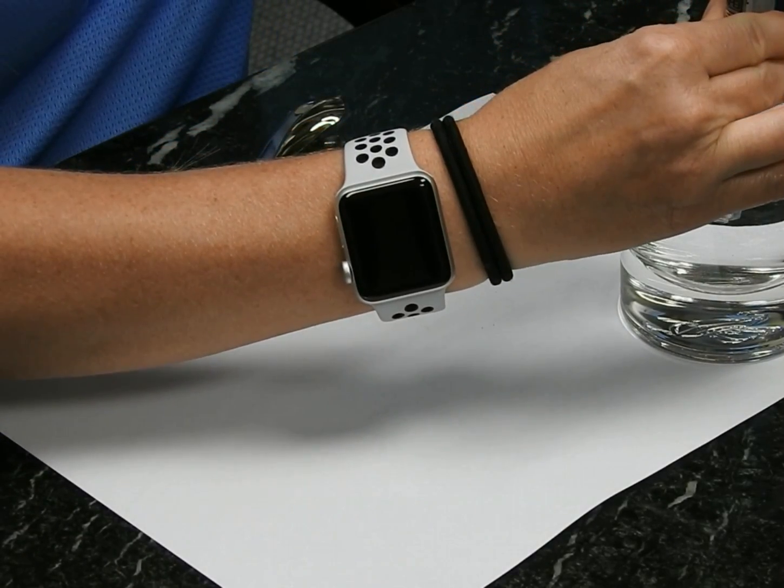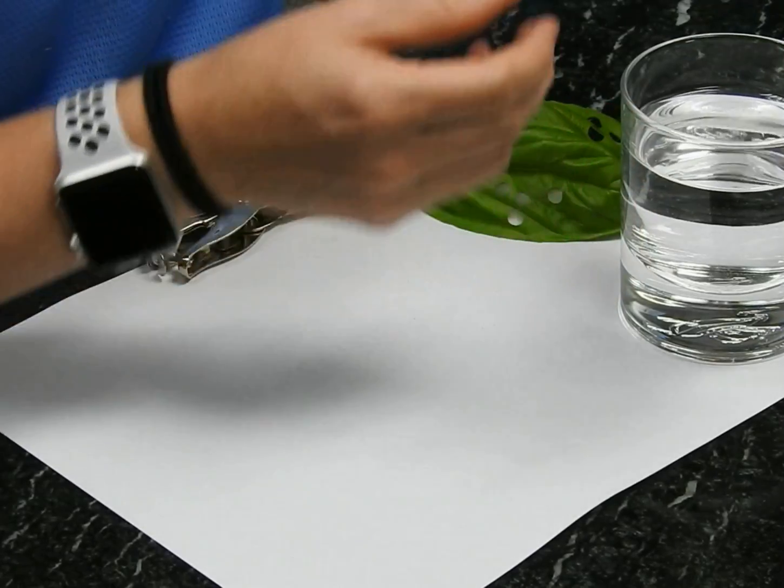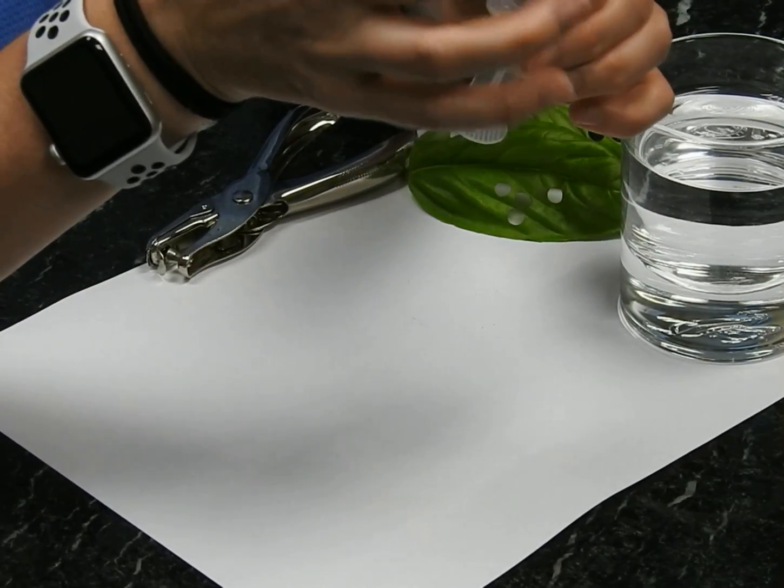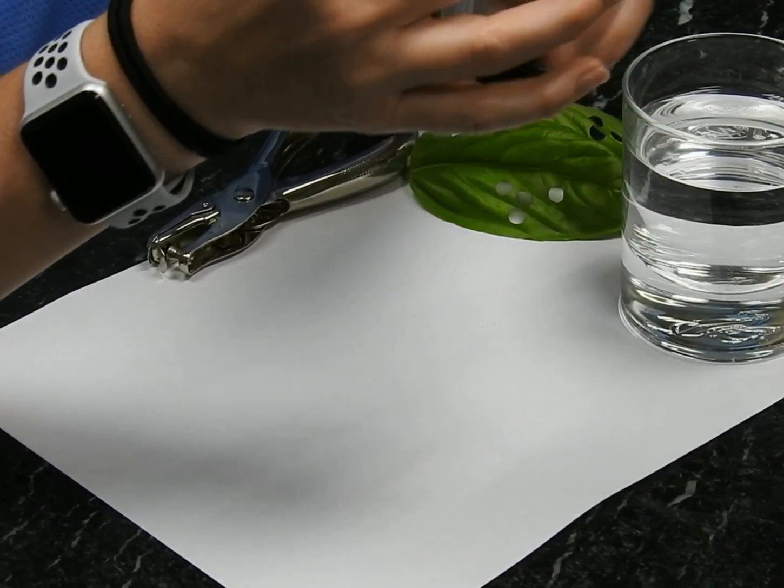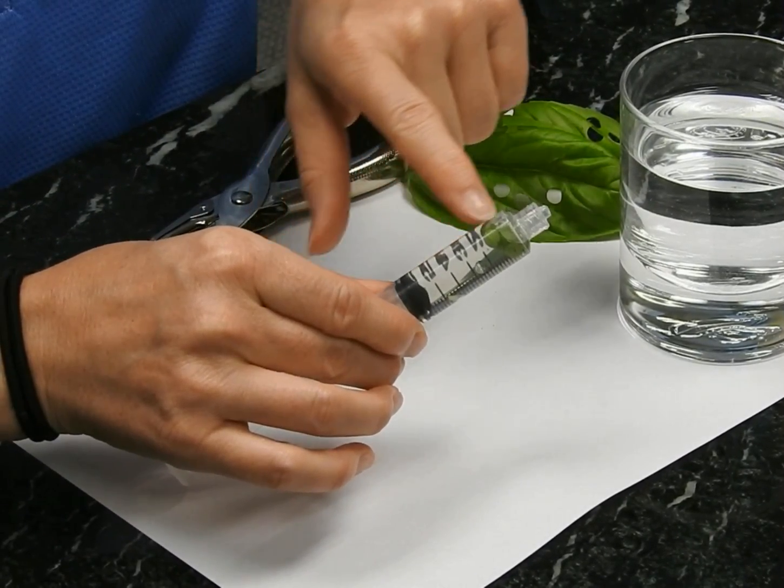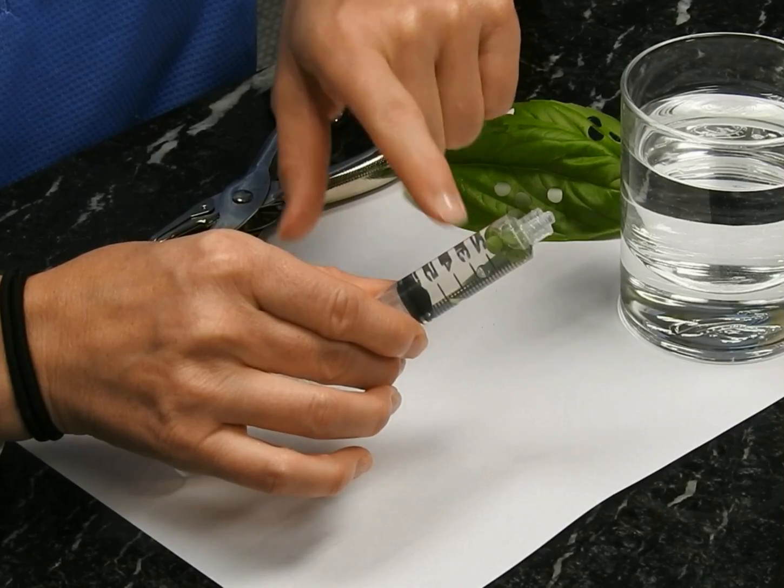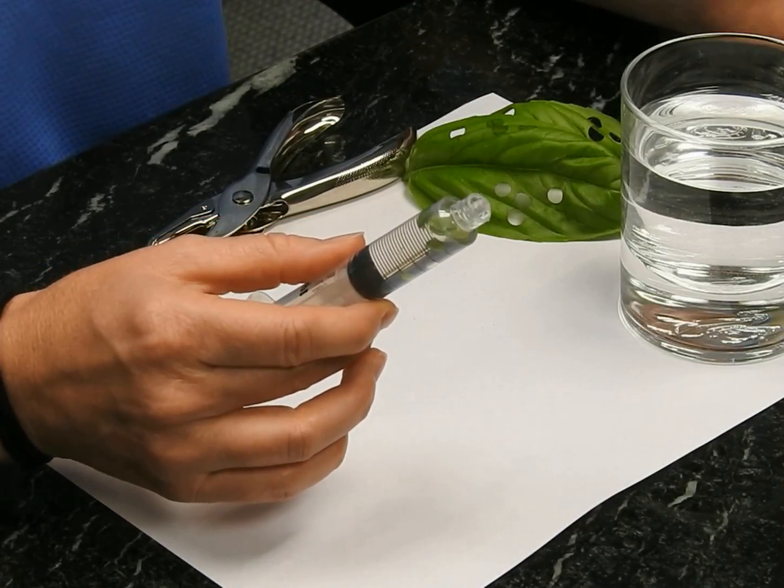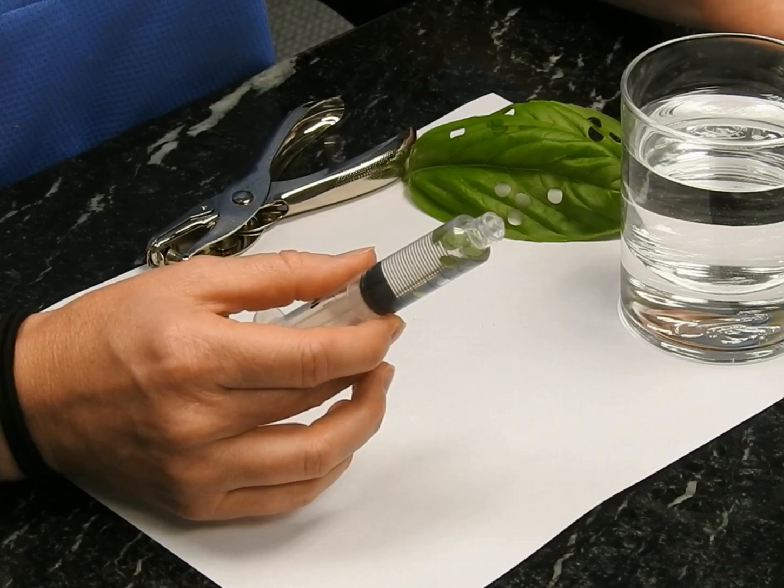Pull up some liquid. If you tap on the edge of your syringe, you'll notice that every single one of these disks is floating. That's not so good because in the experiment, we really need them to sink.